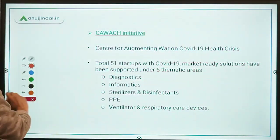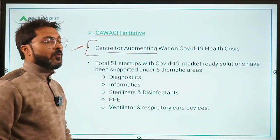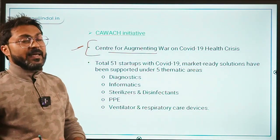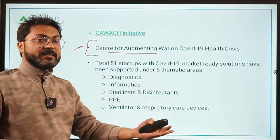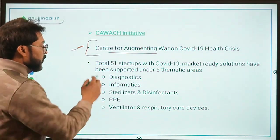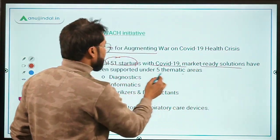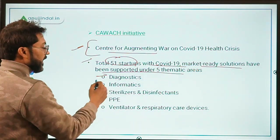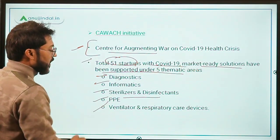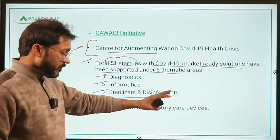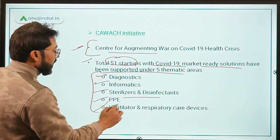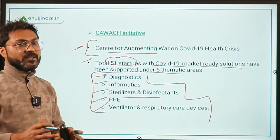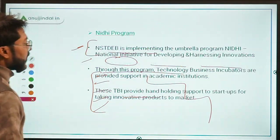The second program is Kavaj, which stands for Centre for Augmenting War on COVID-19 Health Crisis. The Kavaj program operates across five thematic areas and is implemented by the National Science and Technology Entrepreneurship Development Board.